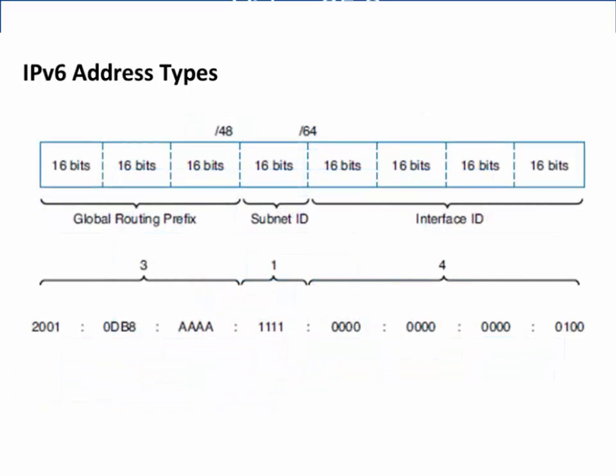Here is a structured outline of an IPv6 address. The first 48 bits is the global routing prefix, which identifies the organization or company — for example, 2001:0DB8:AAAA would represent a company or organization. The next 16 bits is the subnet ID, which the company or organization can use to create subnets within their organization. The last 64 bits is reserved for the interface ID and identifies the local computer or device on the network.